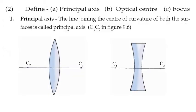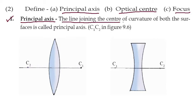Now come to some definitions. Define: principal axis, optical center, and focus. First of all, principal axis — what is the principal axis? The line joining the centers of curvature of both surfaces is called the principal axis. This is C1 and C2.